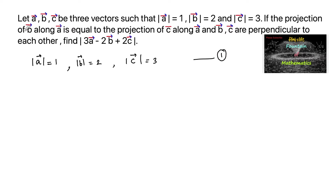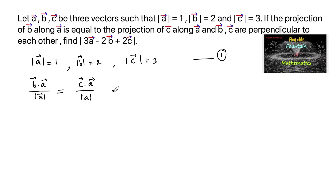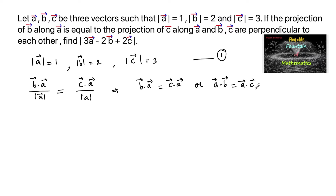If the projection of B along A is equal to the projection of C along A — that is, B·A divided by mod A equals C·A divided by mod A — this implies B·A = C·A, or A·B = A·C, since scalar dot product is commutative.